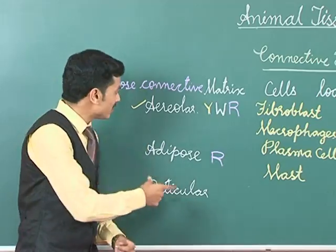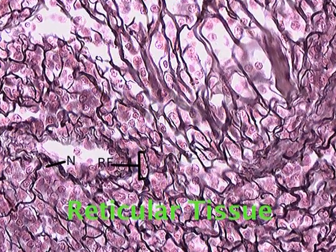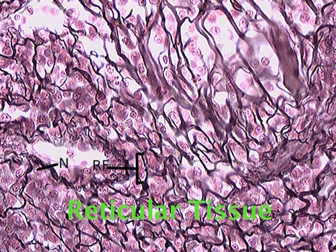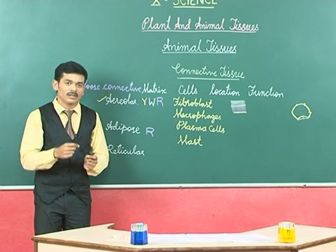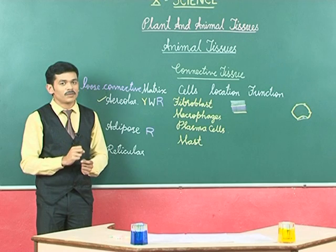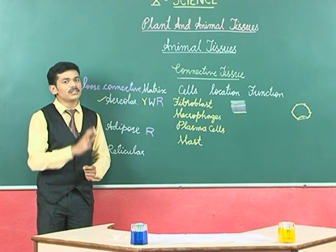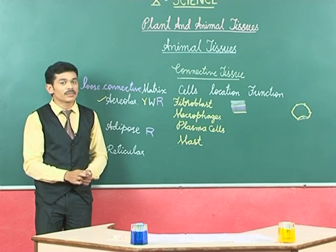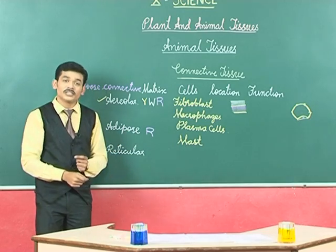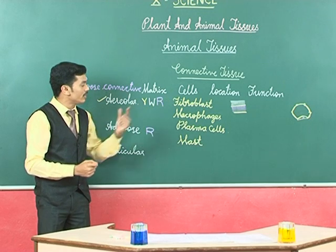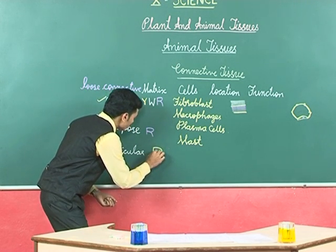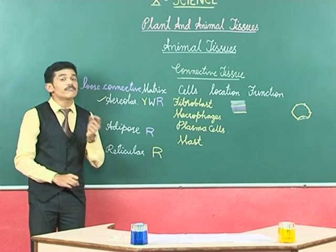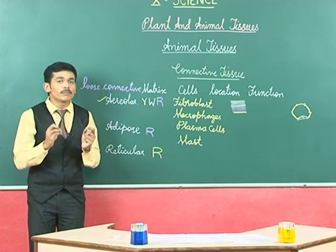Now let us move on to the next important loose connective tissue, which is reticular tissue. You know that organs like the liver, kidney, and heart maintain a particular shape in all bodies. This is because of the presence of reticular tissue. Reticular connective tissue contains predominantly reticular fibers in the matrix and does not have many cells.